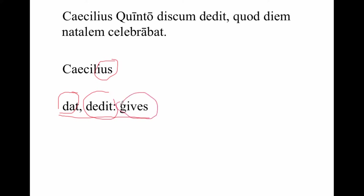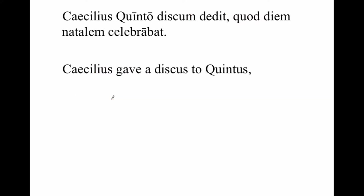So if it were 'dat,' we would translate it as 'gives,' but it's not 'dat.' It's 'dedit.' If it's 'dedit,' it's perfect tense and we will translate it as Caecilius gave — we need a direct object — a discus. He gave a discus to Quintus.